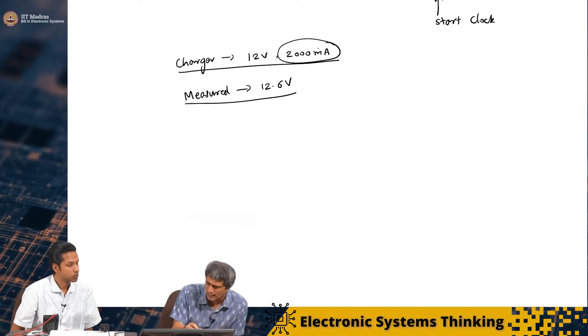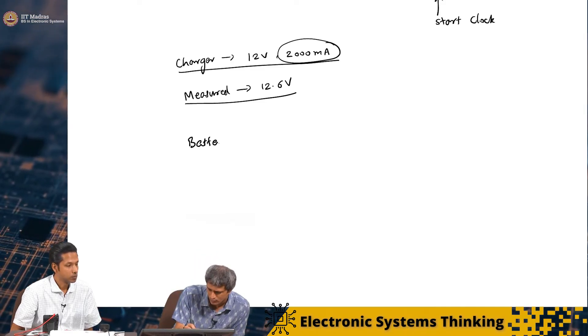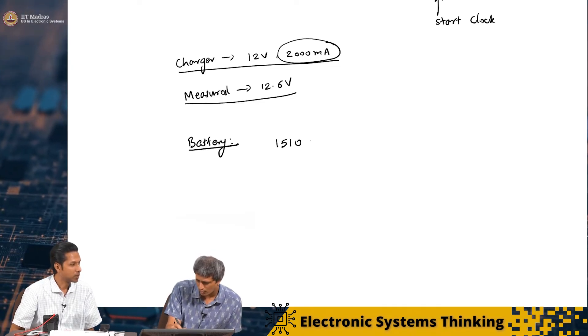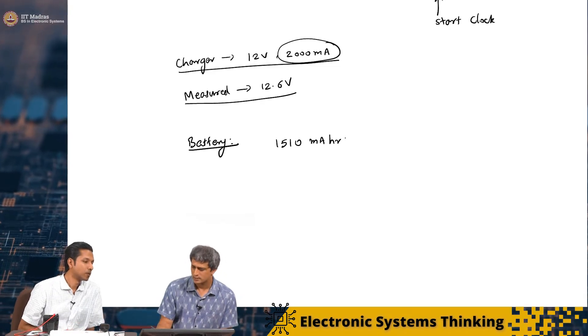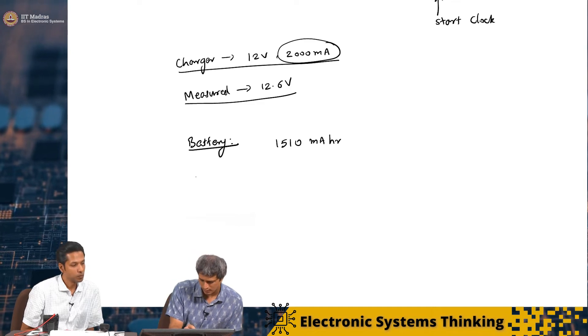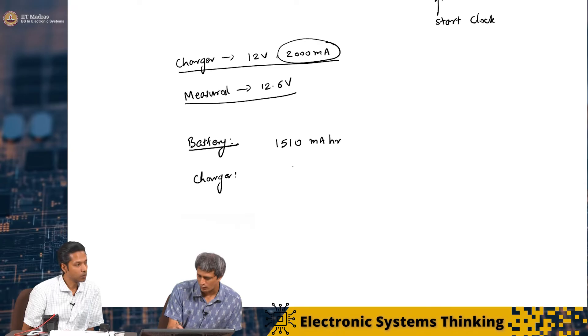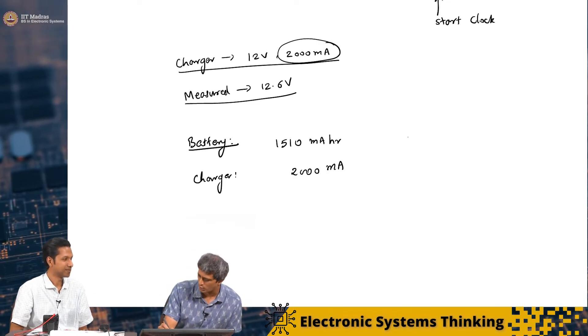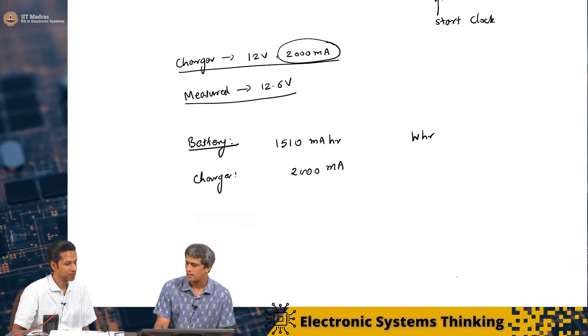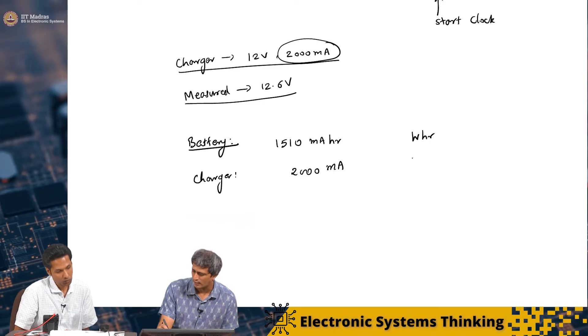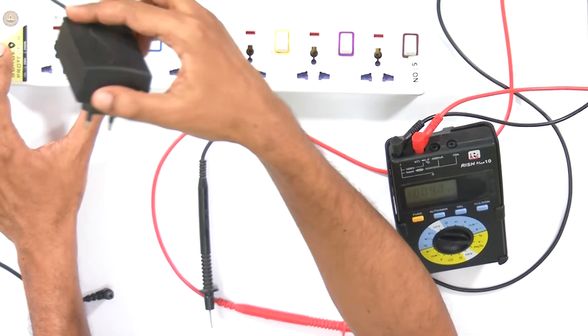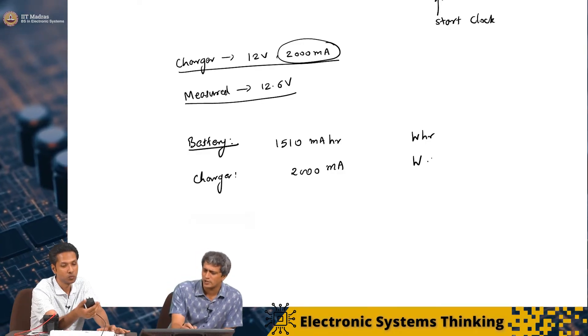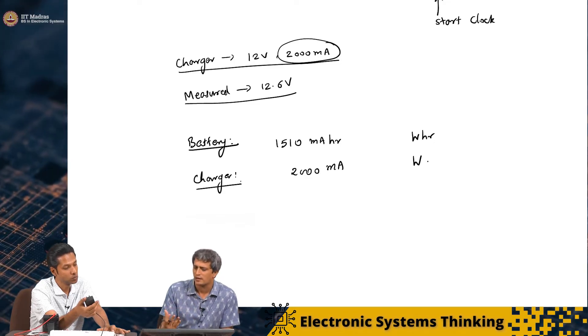So you know last time we looked at a battery, right. If you look at, and the battery if you remember had a rating of 1510 milliampere hour. Milliampere hour, right. Whereas the charger, right, the charger has a rating of 2000 milliamps, right. Alternately, if you remember there was another unit, it was called watt hour. Yeah. And this guy, you know, these chargers will also have a rating in terms of watt, right. So if you just multiply the voltage with the current, you'll get a wattage, right. So why this fundamental difference between the specification in a battery and a charger?